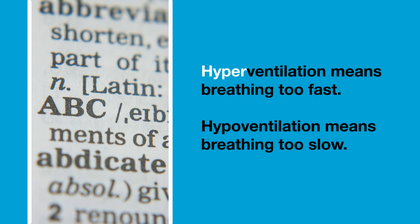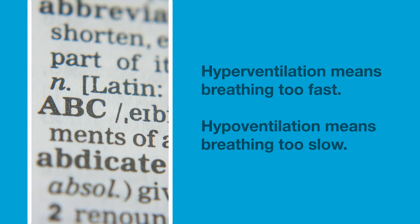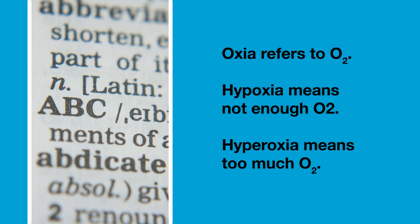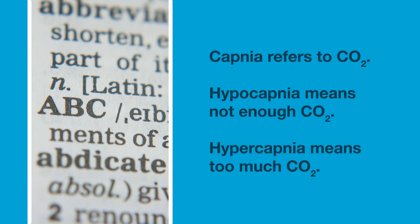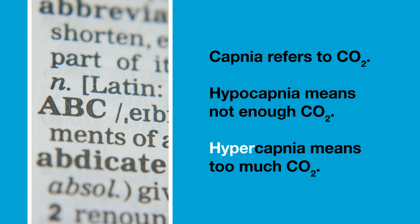Hyperventilation means breathing too fast and hypoventilation means breathing too slow. Oxia refers to oxygen, so hypoxia means not enough oxygen in the body and hyperoxia means too much oxygen. Capnea refers to carbon dioxide — hypocapnea means not enough carbon dioxide in the body and hypercapnea means too much carbon dioxide.